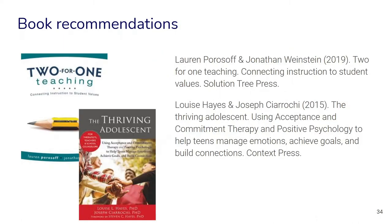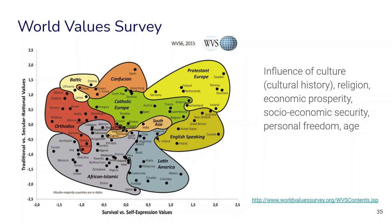Here are some recommended books on these topics. Lorne Porosoff and Jonathan Weinstein's book Two for One Teaching contains many different activities that can help you connect curriculum content and themes to student values. Another interesting topic related to values is the World Values Survey — a regular survey conducted over several decades where scientists ask people from about 80 countries across all regions of the world about the things they value on a number of dimensions. Scientists find here the influence of culture, cultural history, religion, economic prosperity, and socioeconomic security and age on patterns of how people respond to certain kinds of values.